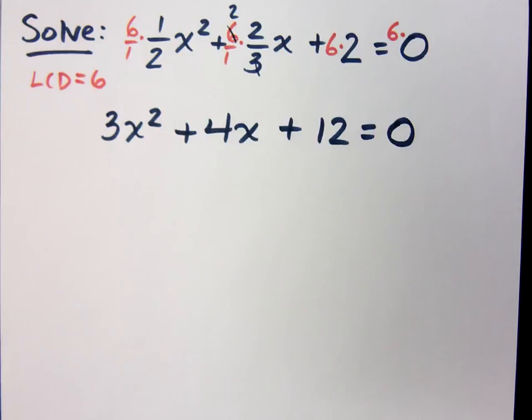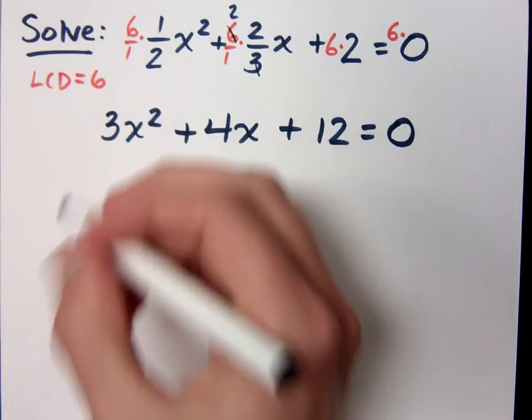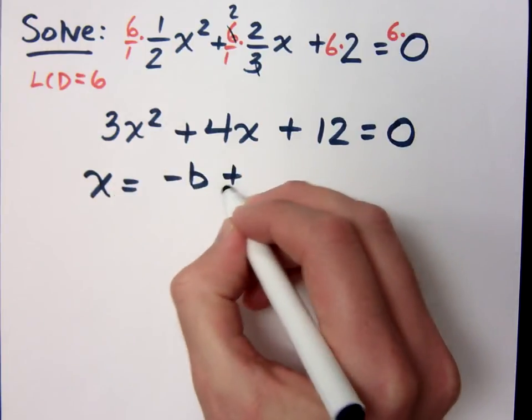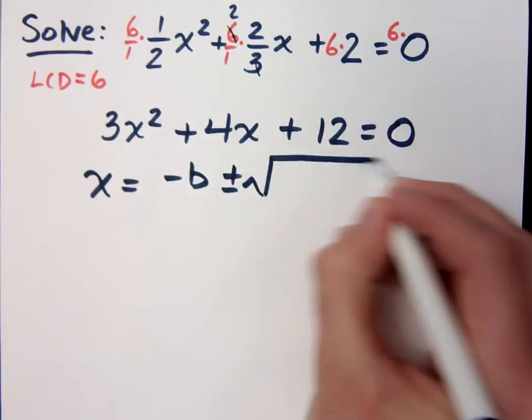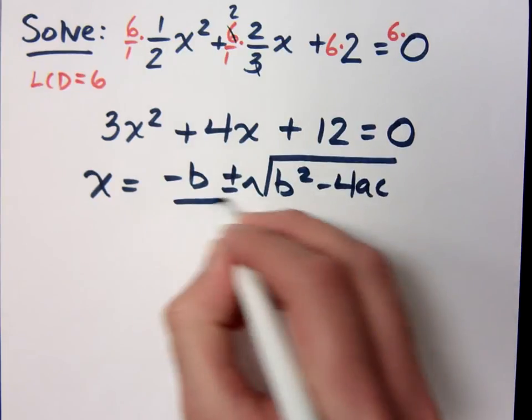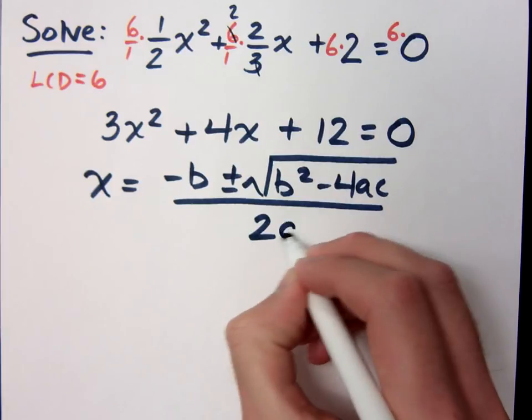Now if only we had a formula to help us out with this. Hmm, what could that be? x equals negative b plus or minus the square root of b squared minus 4ac all over 2a.